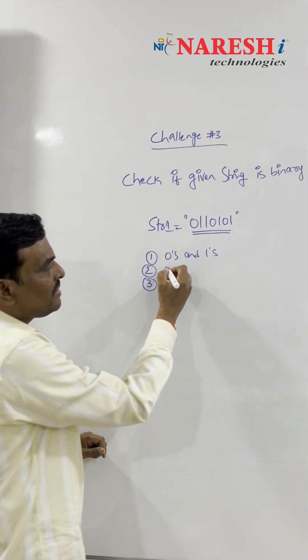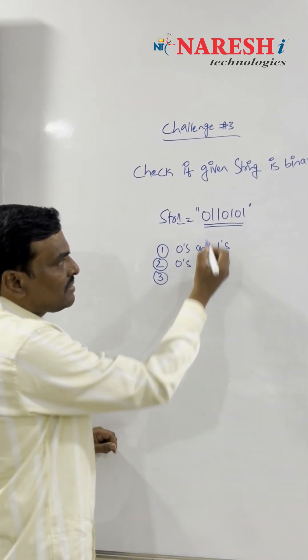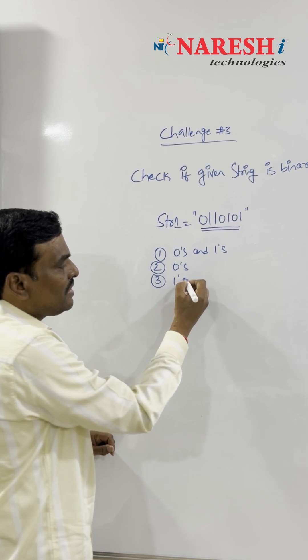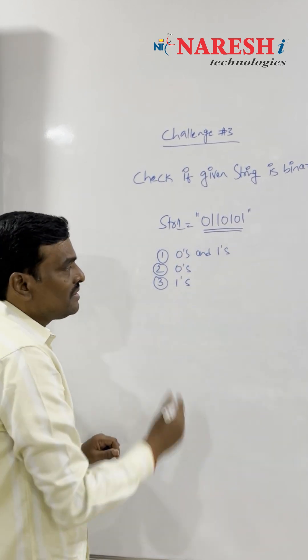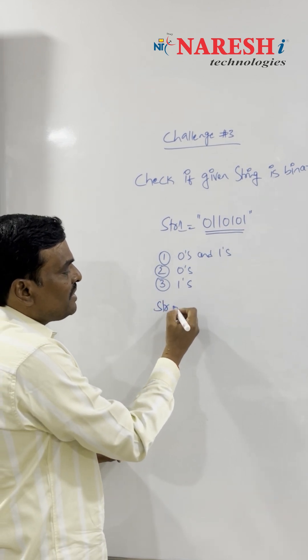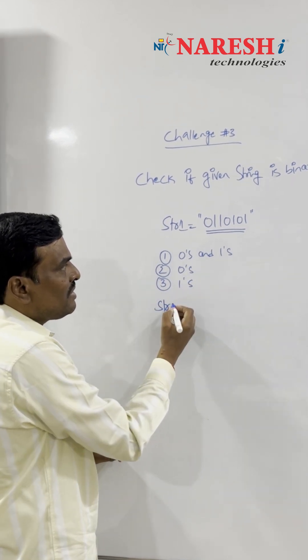It is called a binary string. Even if it contains only zeros, it is called a binary string. If it contains only ones, it is also called a binary string. Suppose the string contains any other characters other than zeros and ones, then it is not called a binary string.